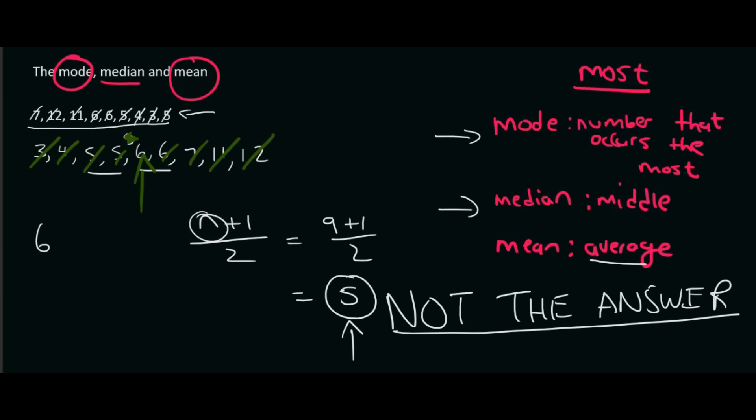That formula tells you the position of the answer. So we go to the position number 5. And that will be 1, 2, 3, 4, 5. Aha. So position 5 is 6.